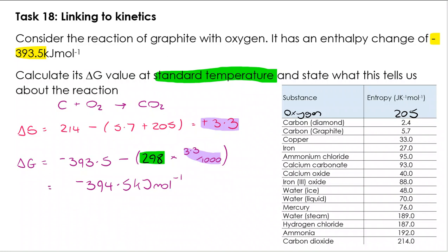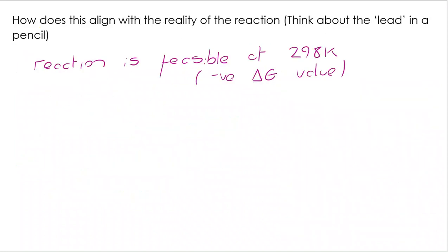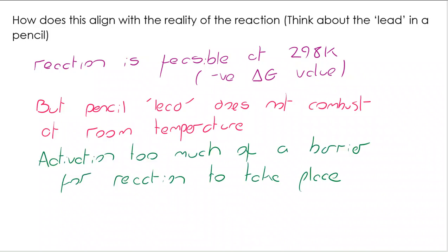How does this align with the reality of the reaction? Think about the lead in a pencil, which is obviously graphite. So I've already said here the reaction is feasible at 298 K because delta G is negative, but we know that pencil lead graphite doesn't combust at room temperature. There must be something else at play. It doesn't mean that it isn't feasible at room temperature, but it does mean that there is a barrier to the reaction taking place. In this case it's the fact that the activation energy is so high that the reaction would never take place at 298 K.